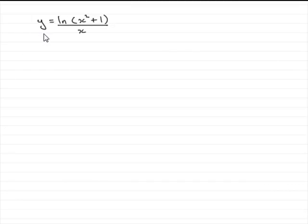In this question we've got to find dy/dx for y equaling the natural log of x squared plus 1, all divided by x. What we've got here is two functions of x being divided by one another and I can't simplify this any further. So this is a typical question on using the quotient rule.